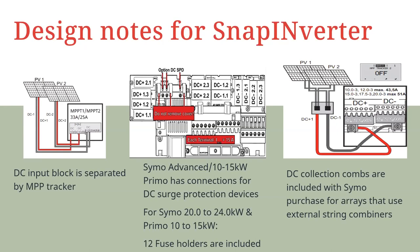When exactly would fusing be required for a string? Overcurrent protection fuses protect the conductors and the modules in the case that a string faults with another current, or faults with another string and begins backfeeding current. The expected DC current could be three times greater than expected when these faults occur. The best rule of thumb is that systems with three or more strings input to the same maximum power point tracker will require fusing. Please see NEC code 690.8 for more information on these calculations. That rule of thumb is true for about 99% of the systems.